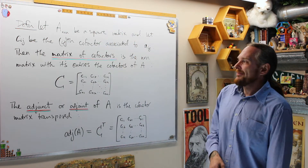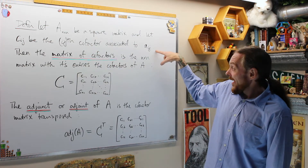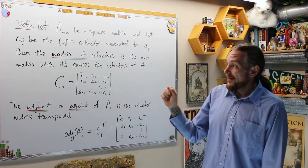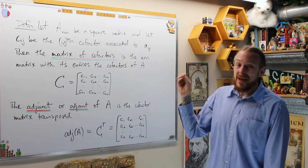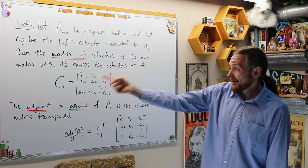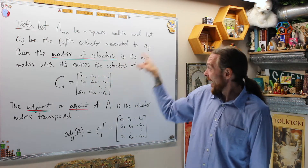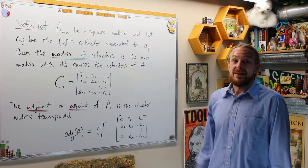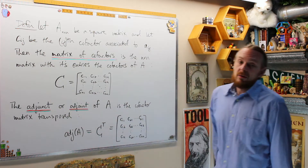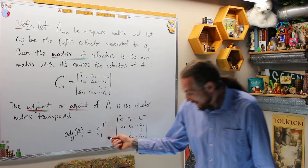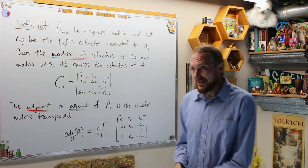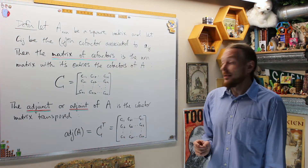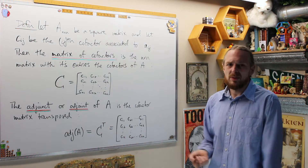If I've given an n by n matrix, the i-j-th cofactor is associated to the i-j-th entry. Go watch the previous video on how to build cofactors. What we're going to do is build an entire n by n matrix out of those cofactors. So every cofactor C_ij gives us an n by n matrix of cofactors. Then the adjunct — the matrix of cofactors transposed — is denoted adj. The first row of the cofactors becomes the first column in the cofactor transposed. That's what transposing does: it makes rows into columns.